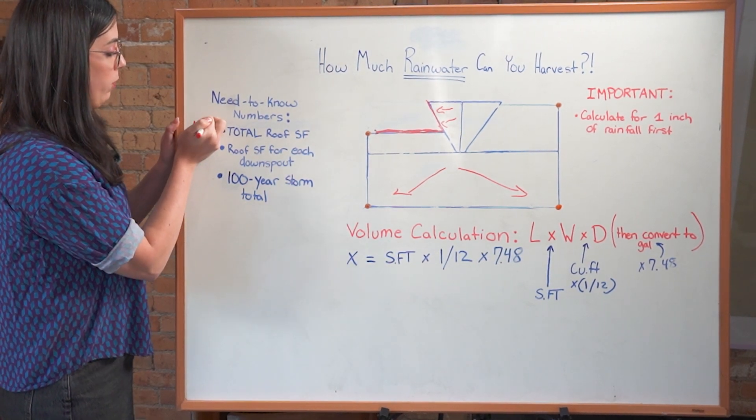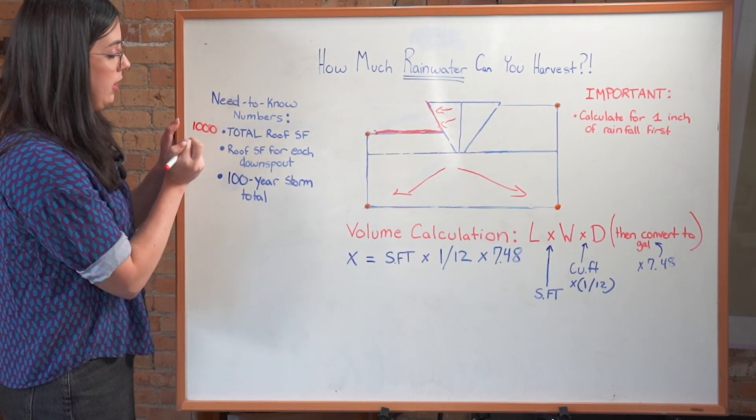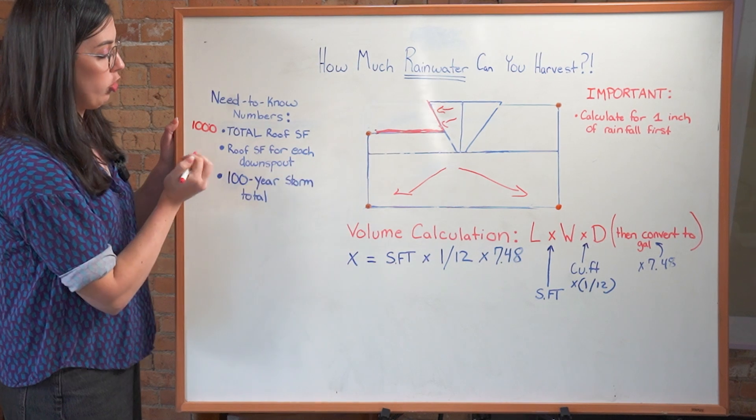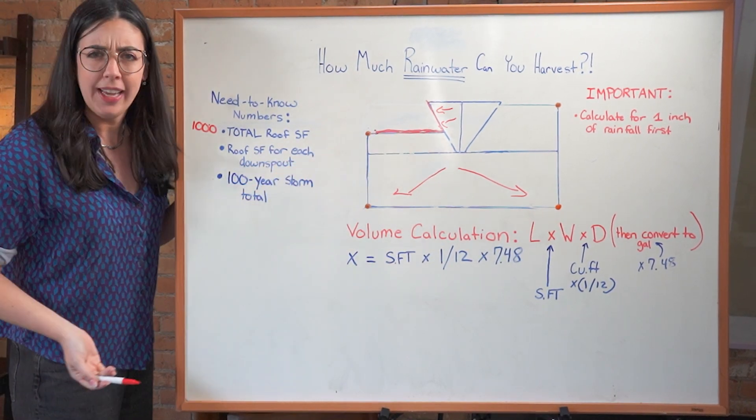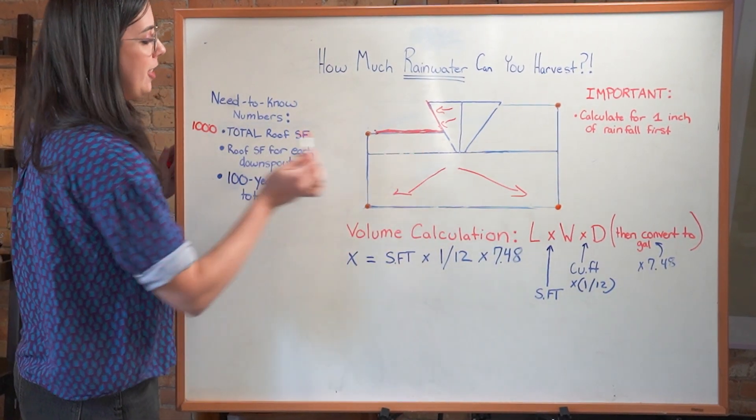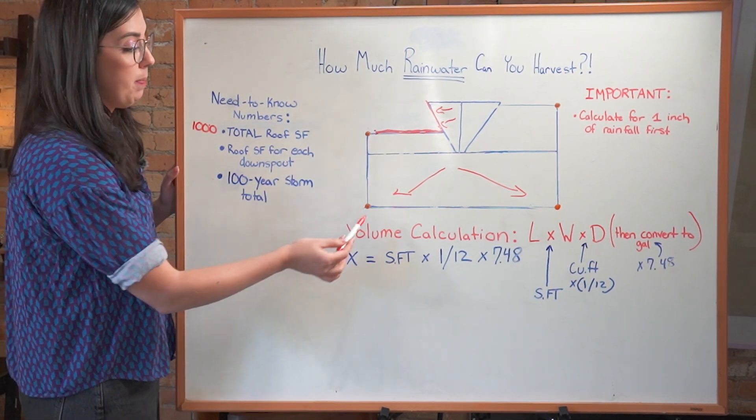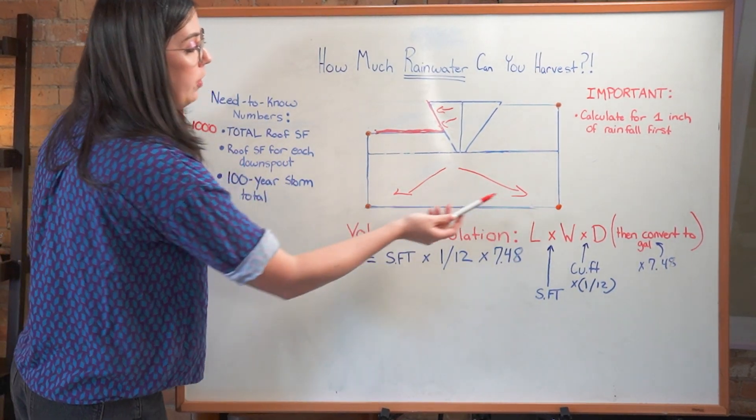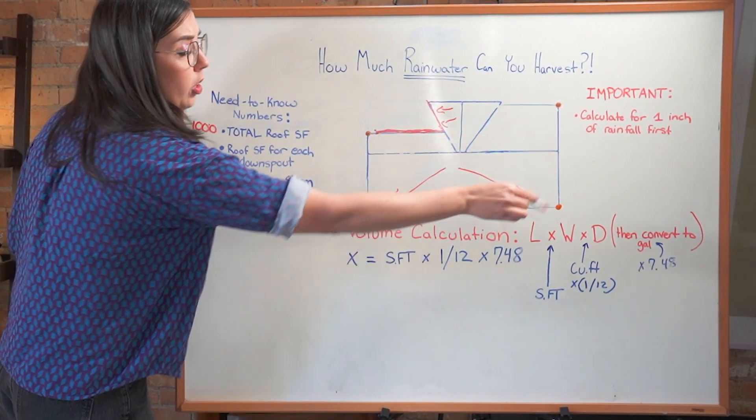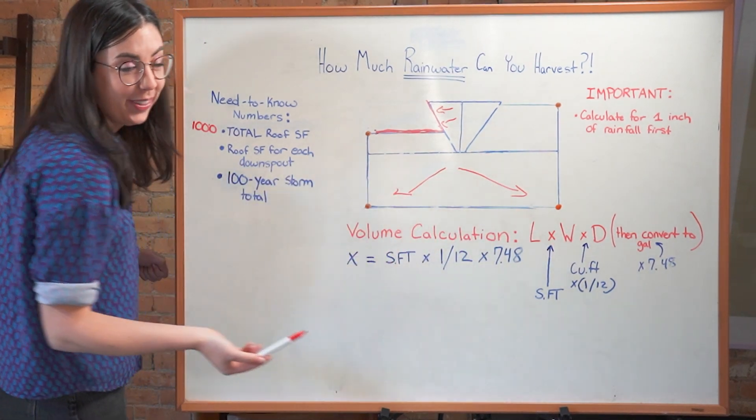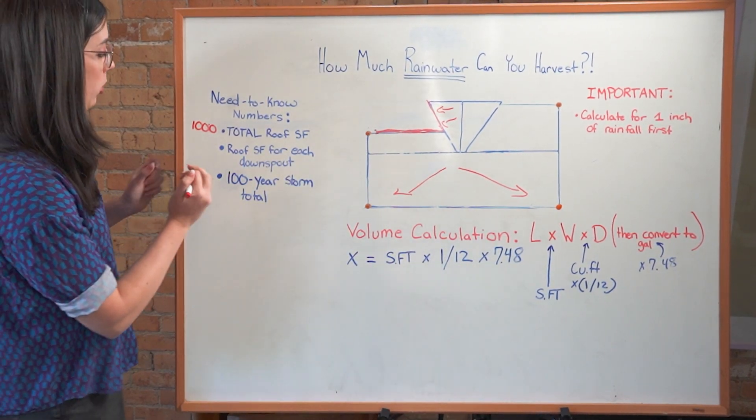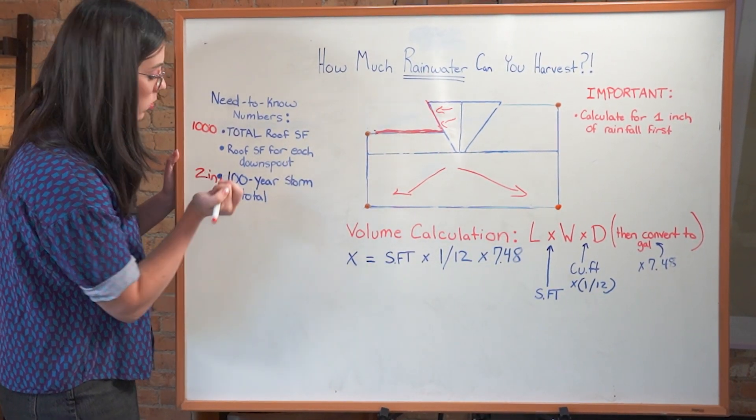I'm going to put in some filler numbers here so we're using hypotheticals in this case, but I want you to plug in your own numbers at home. So the total square footage of this roof here, fictionally, is going to be 1000. The roof square footage for each downspout will vary, but in this case, it'll be 250, 250, something else, something else. I'm just going to work on this today to keep it simple. And then the 100 year storm total for Utah is going to be two inches.